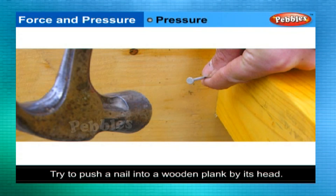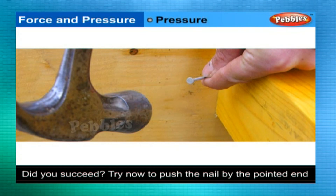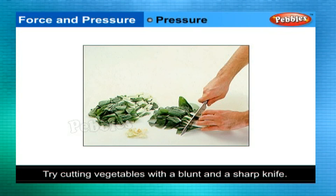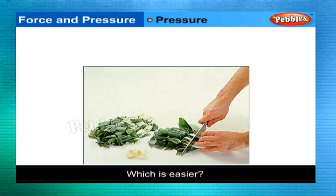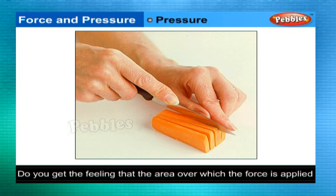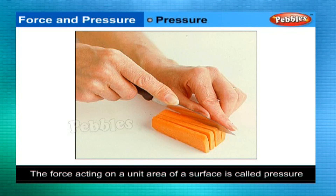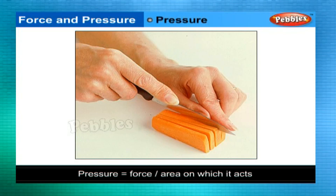Pressure: Try to push a nail into a wooden plank by its head — did you succeed? Now try to push the nail by the pointed end. Try cutting vegetables with a blunt and a sharp knife — which is easier? The area over which the force is applied, for example the pointed end of a nail, plays a role in making these tasks easier. The force acting on a unit area of a surface is called pressure. Pressure is equal to force divided by the area on which it acts.